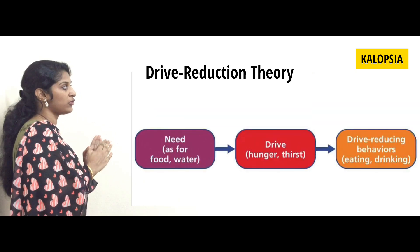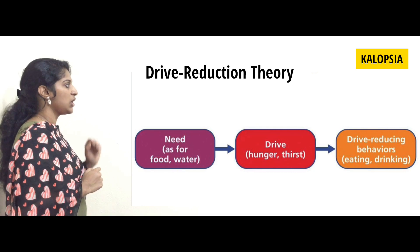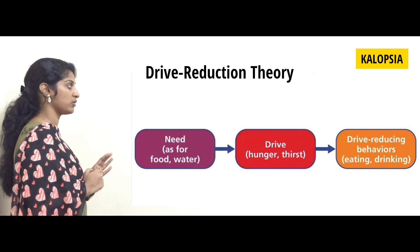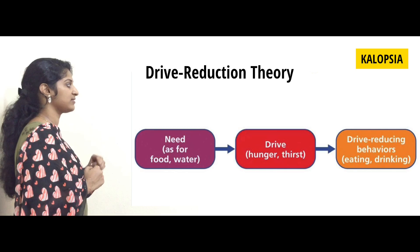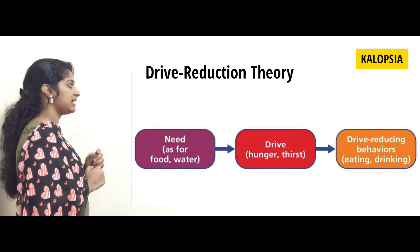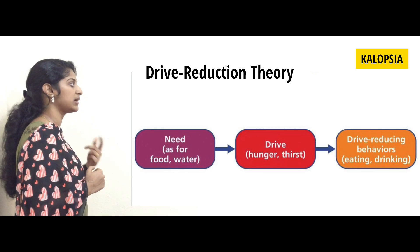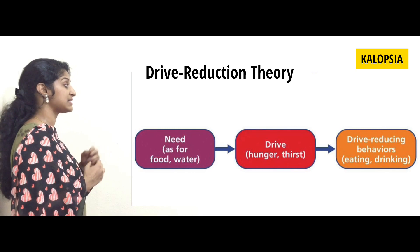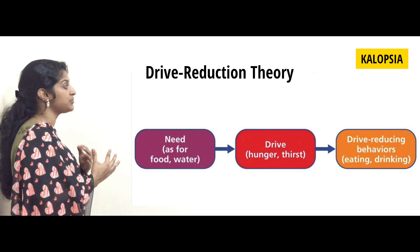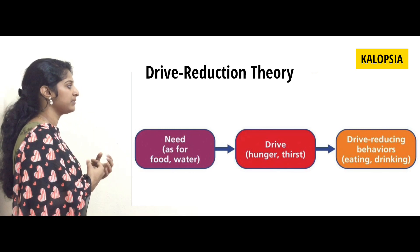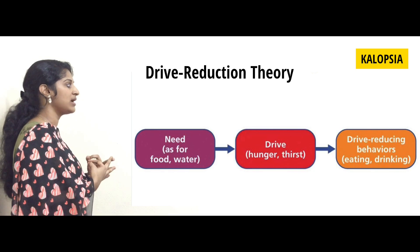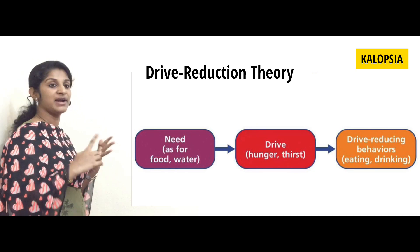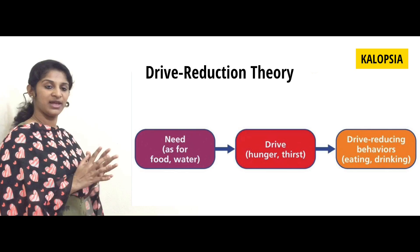Let's see the model for drive reduction theory. In order to fulfill this theory, there is a three-step process that takes place. First is need — it can be the need for food, water, air, or sex. The second stage is drive, which is to fulfill the need. The third is drive-reducing behavior, such as eating, drinking, etc.